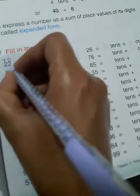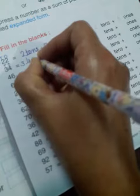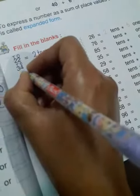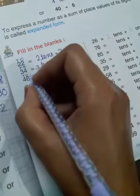Here 34 - this is ones and this is tens. So write here: 3 tens plus 4 ones. Here, the place value of 6 is ones and the place value of 4 is tens. So we write here: 4 tens plus 6 ones.